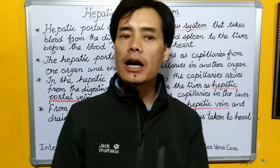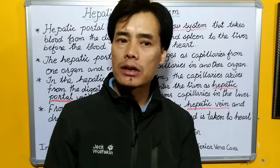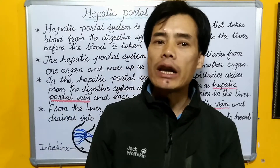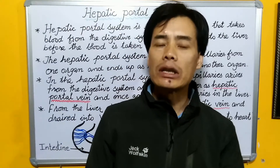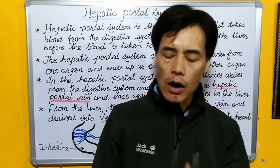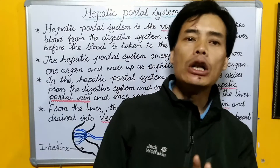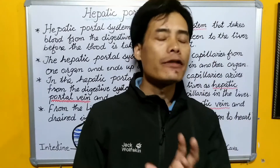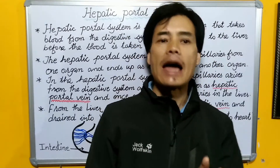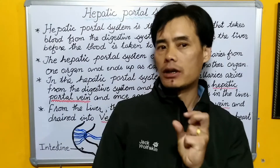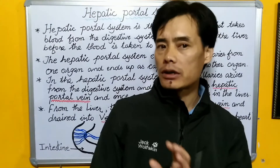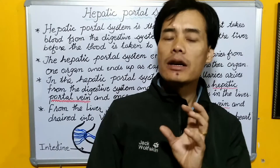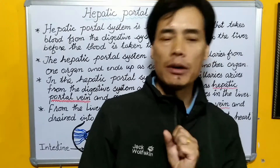There is another kind of portal system, which is called the renal portal system, which is found in the lower vertebrates like fishes and amphibians. But this renal portal system is not found in human beings.